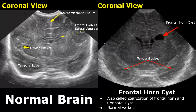A frontal horn cyst can be a normal variant. It is also called coarctation of the frontal horn and a conatal cyst. It is usually formed by folding of the frontal horn on itself.